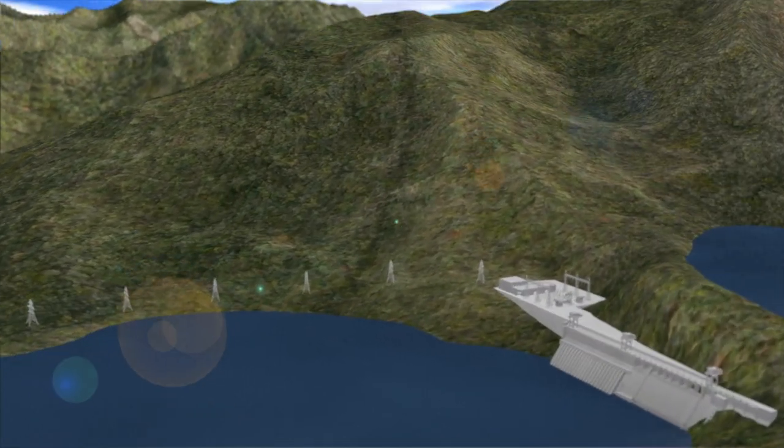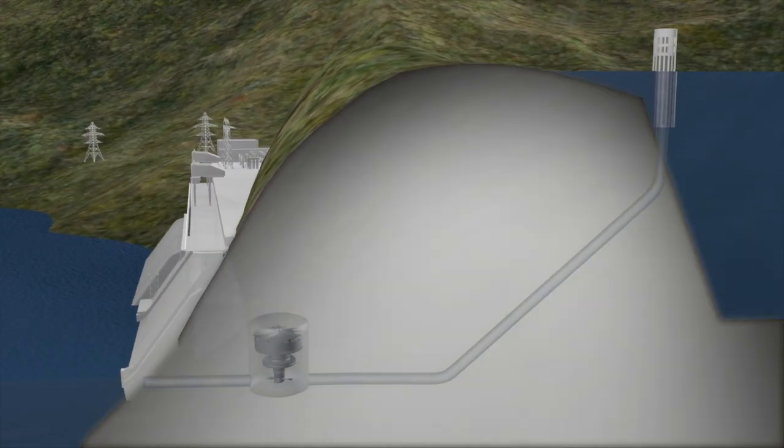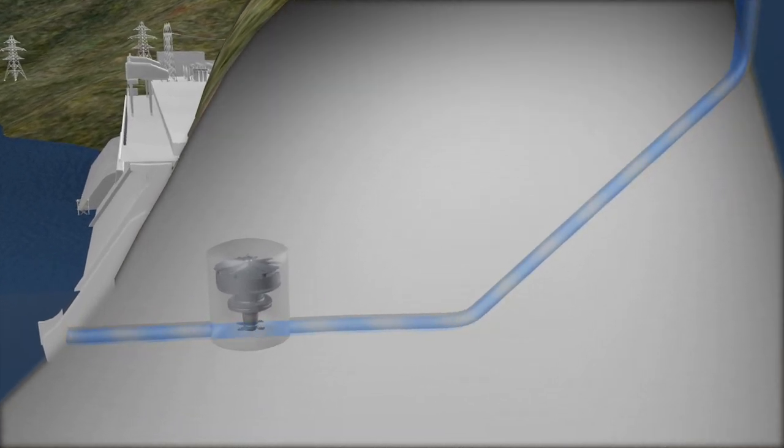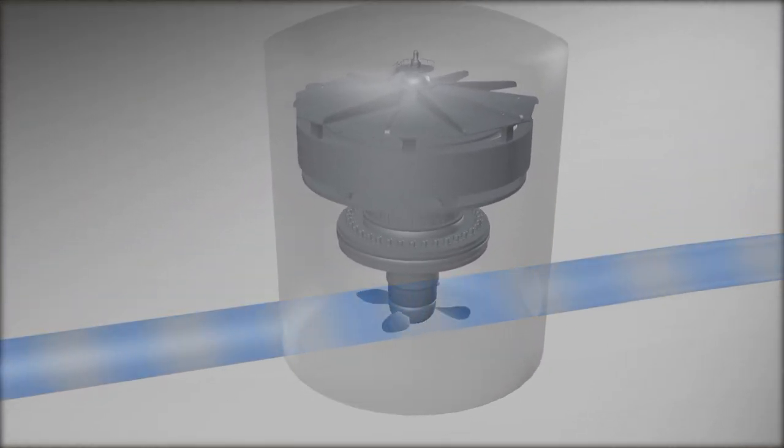Hydroelectric stations typically have two reservoirs located at different elevations. When electricity is needed, water is released from the upper reservoir through tunnels that lead to a turbine and generator, which produce electricity for homes and businesses.